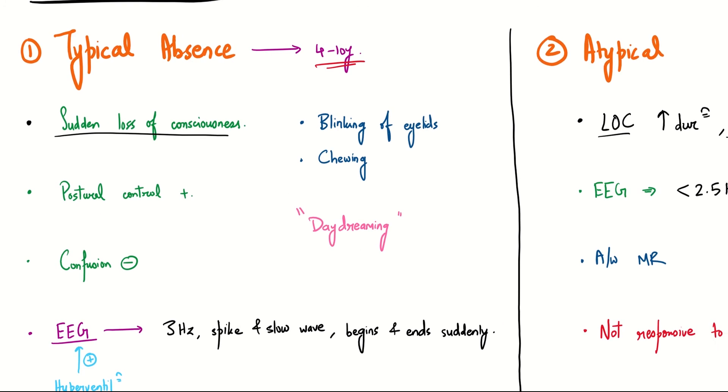Postural control is present - please remember this, as it is important in differentiating the various seizures in the generalized category. Confusion is absent in typical absence seizure. We have the characteristic blinking of eyelids and chewing. Since this is seen in a child, the teacher will often complain of daydreaming and the performance of the child will decrease with time.